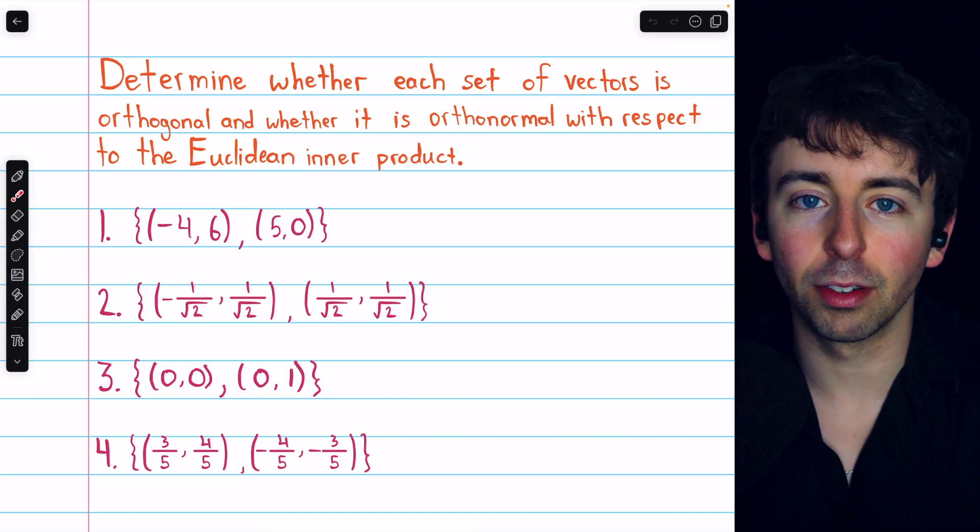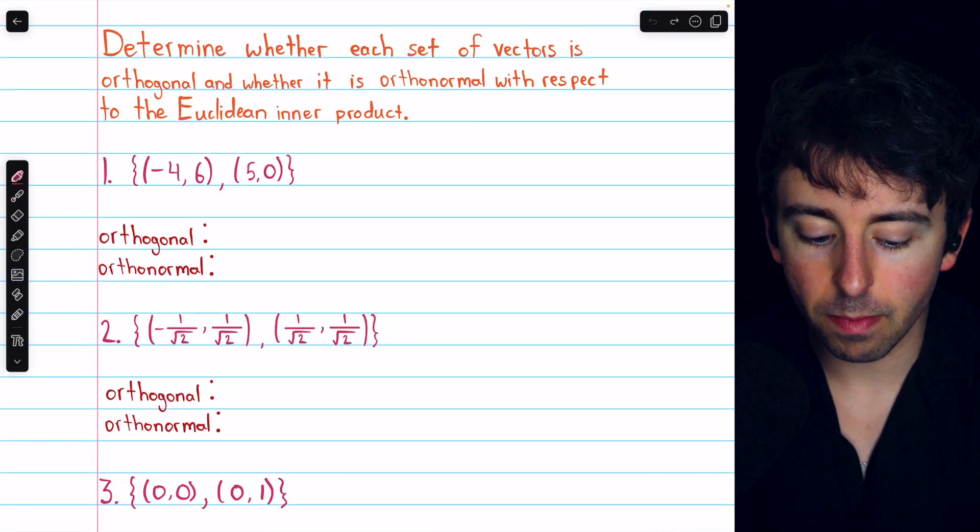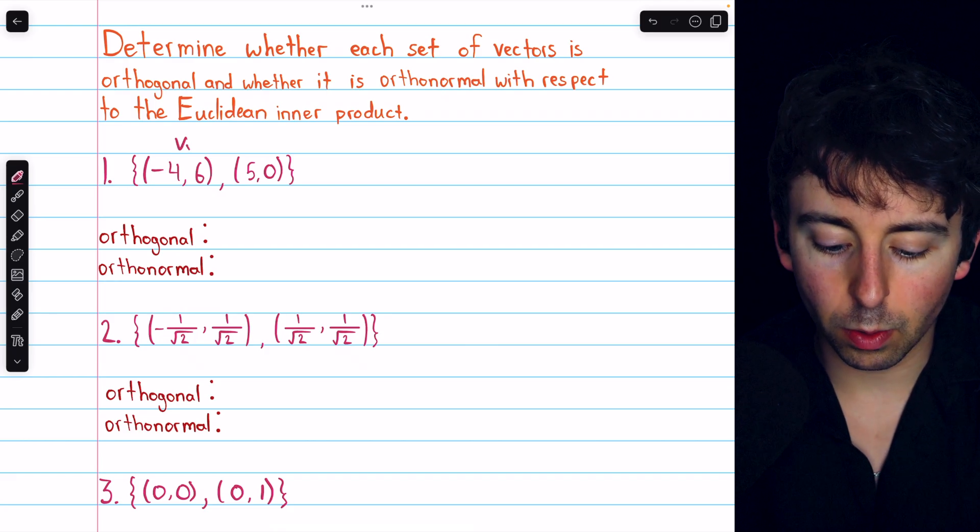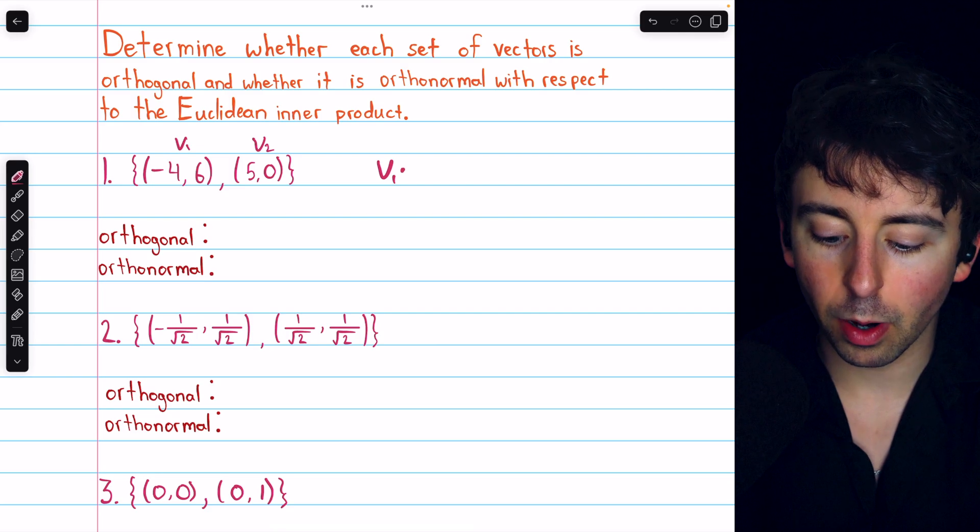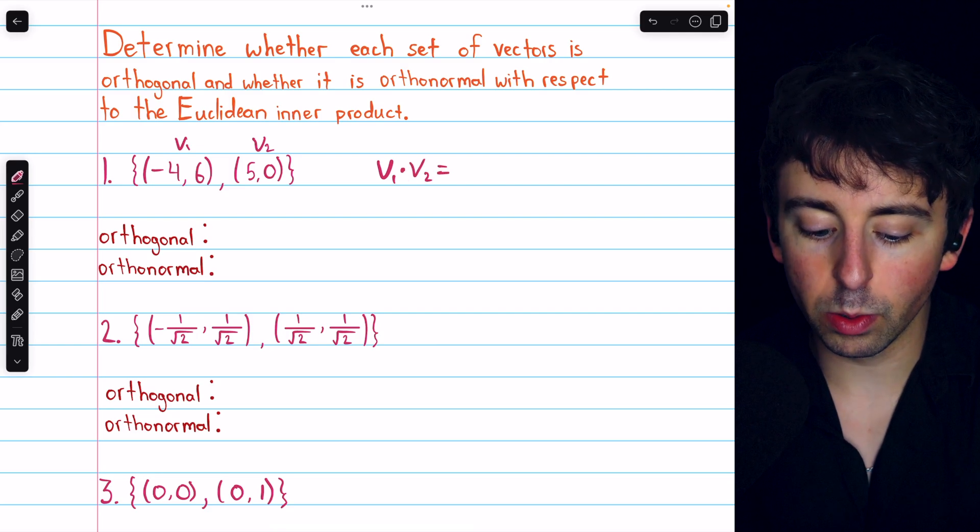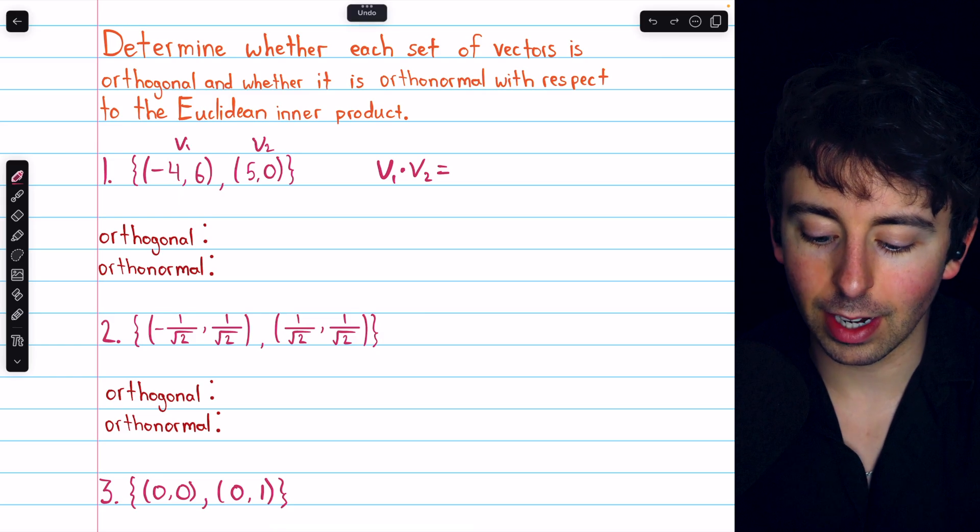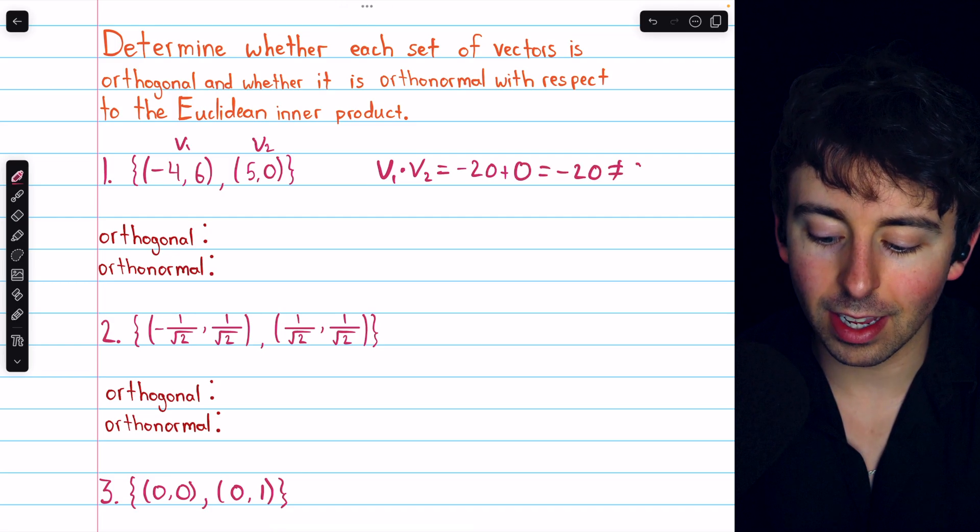Let's start walking through the solutions. Beginning with problem one, are these two vectors orthogonal? Well, if we call the two vectors v1 and v2, we would have to compute their dot product to determine if they are orthogonal or not. So we would multiply the corresponding components, negative 4 times 5, and then add them together, 6 times 0, so plus 0.